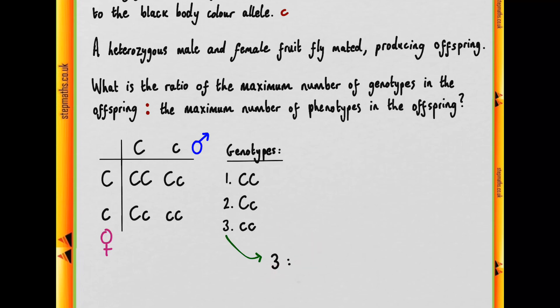Now let's work out the ratio with the phenotypes. How many phenotypes do we have? Well, firstly, we have these three paired together. Since they have a dominant allele, they'll express it.